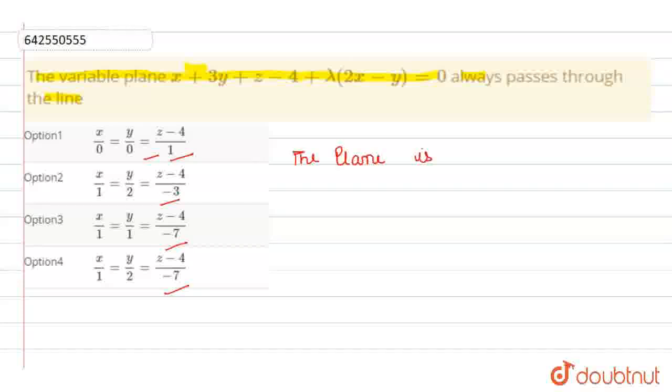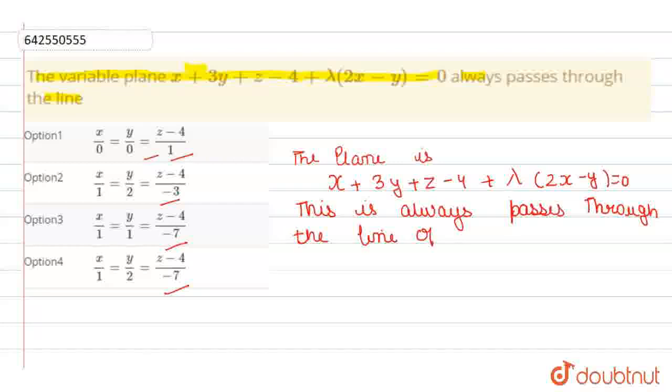The plane is x plus 3y plus z minus 4 plus lambda. This always passes through the line of intersection of planes.